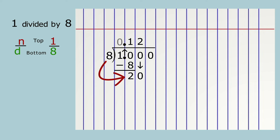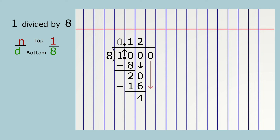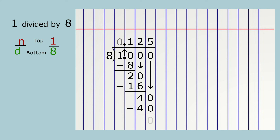Eight goes into twenty two times. Two hundredths times eight is sixteen hundredths. Twenty hundredths minus sixteen hundredths is four hundredths. Use an arrow to bring down the zero for the thousandths place. Forty thousandths divided by eight is five thousandths, with nothing left over. Forty thousandths minus forty thousandths is zero. The decimal number tells you the fraction: one hundred twenty-five thousandths.